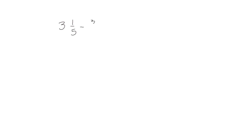There's another strategy. We have a similar problem where we can't take 3 fifths away from 1 fifth — we don't have enough fifths to subtract. This time, we're going to decompose the original number into 2 and 1 fifth and 1. So 3 and 1 fifth has been broken into 2 and 1 fifth plus 1. From the 1, we're going to subtract 3 fifths. We can think of 1 as 5 fifths, and when we subtract 3 fifths, we have 2 fifths left.